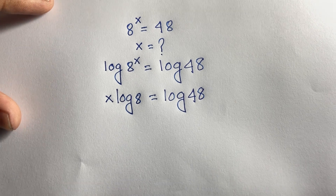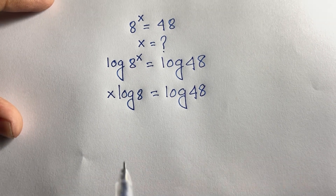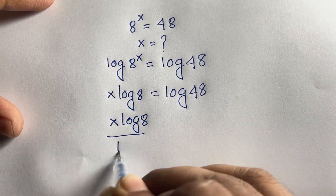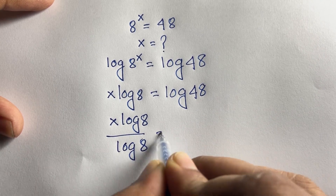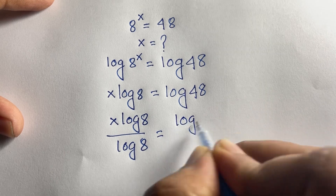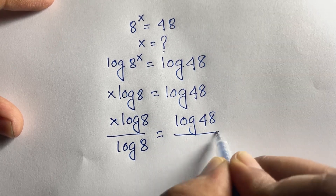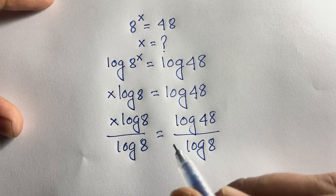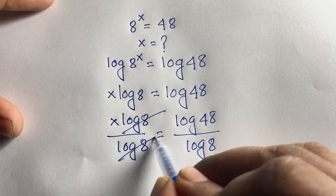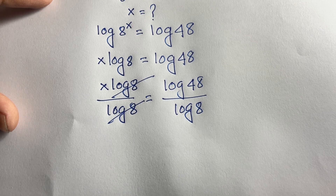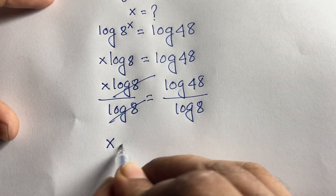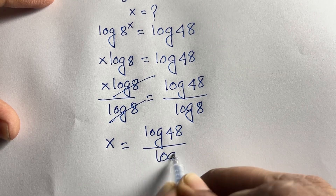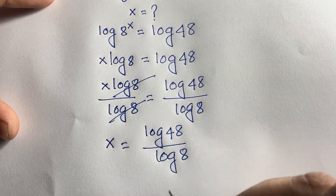Now, if I divide both sides by log 8, I get x times log 8 over log 8 is equal to log 48 over log 8. The log 8 on the left side cancels, and we find x is equal to log 48 over log 8. This is our answer.